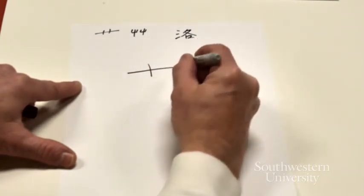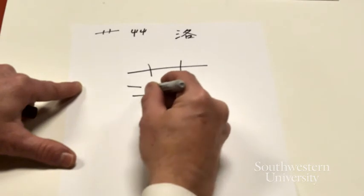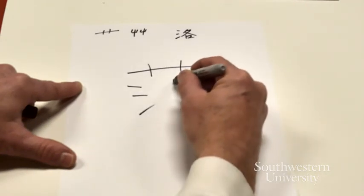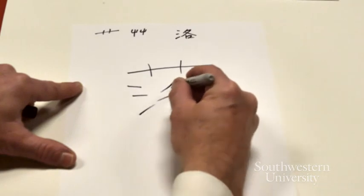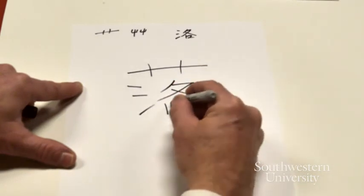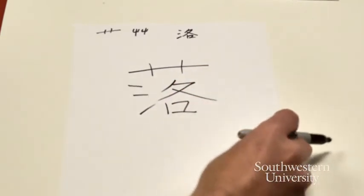Heng, shu, shu, dian, dian, ti, pie, heng, pie, na, shu, heng, zhe, heng, lao.